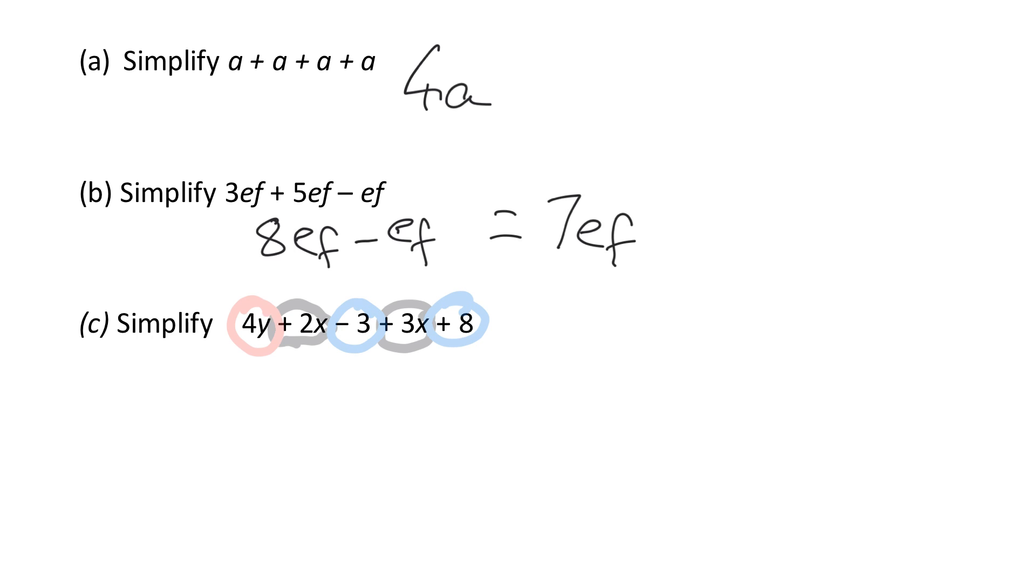I'm going to collect the like terms together. I've got 4y, I've got 2x + 3x which is 5x, and then -3 + 8 is +5. That would be my final answer.